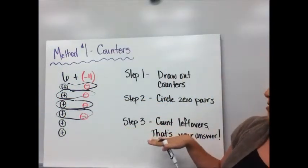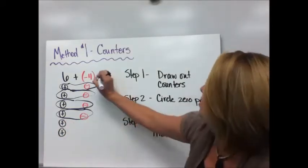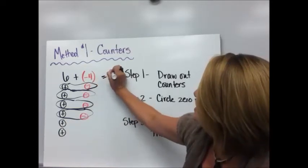So I have four zero pairs. Step three, I'm going to count your leftovers and that's going to be your answer. One, two. And those are positive. So my answer is positive two.